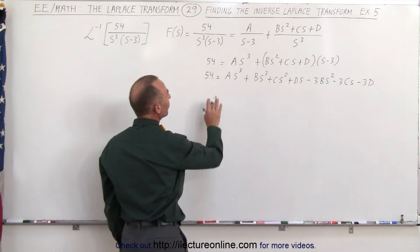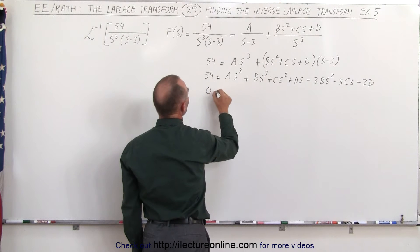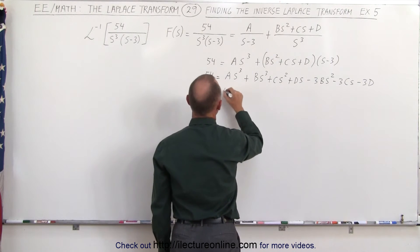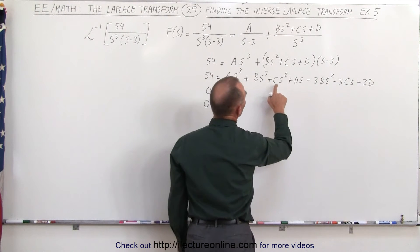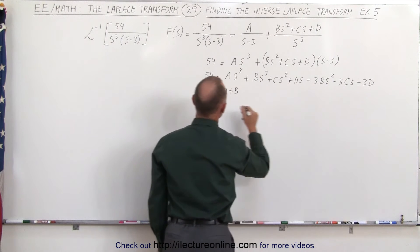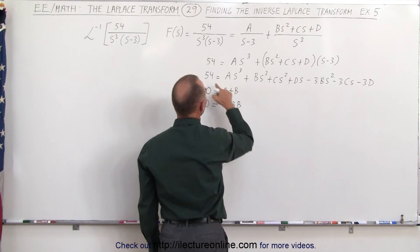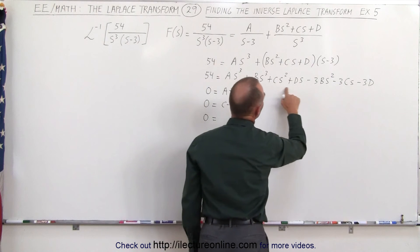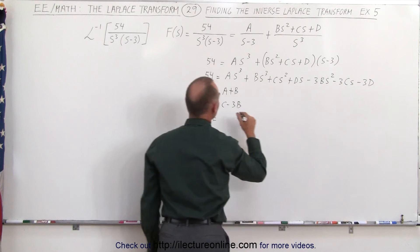On the left side we do not have an s cubed term, which means we get 0 is equal to a plus b. We don't have an s squared term, so we have 0 is equal to c minus 3b. We don't have an s to the first term on the left side, so we get 0 is equal to d minus 3c.